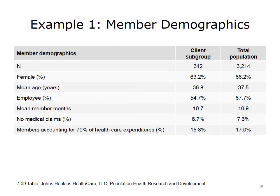This table shows subgroups within the population. The far right-hand column contains data for all members of the population, and the middle column shows data for the subgroup being compared. In the entire population, 66% are female and the mean age is 37.5—a relatively young population. This is an employed population: 67.7% are employees, and the other percentage are dependents. The percentage with no medical claims is only 7.8%. And the percentage of members who account for 70% of the health care expenditures is a relatively small segment—17% of the total population.